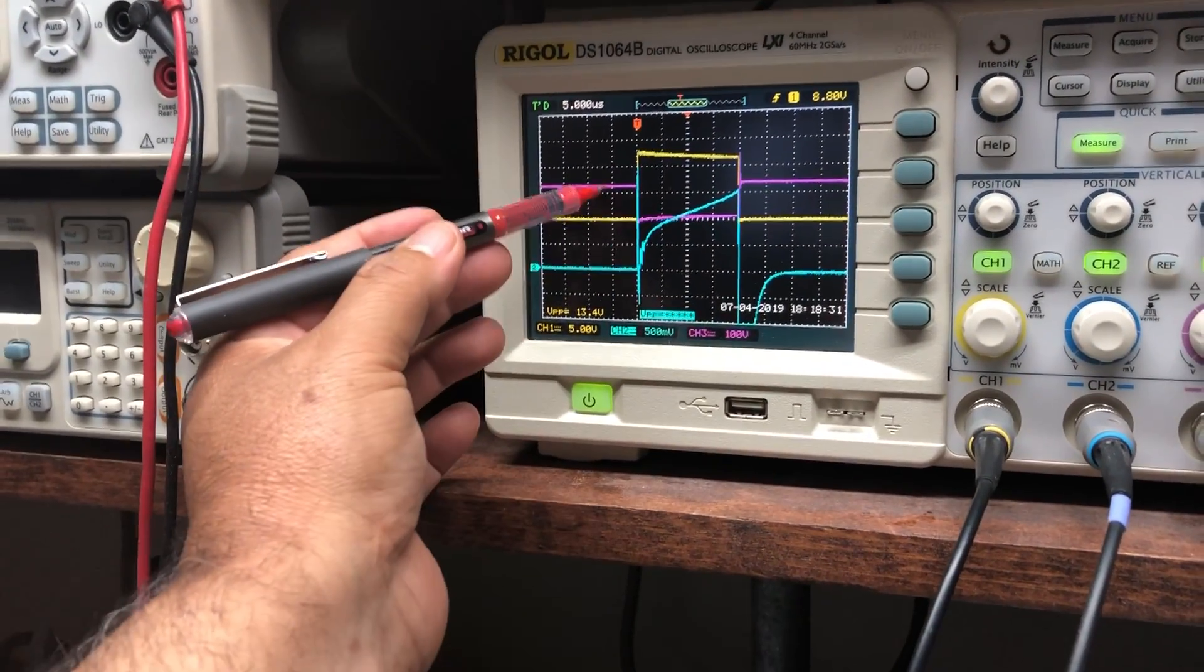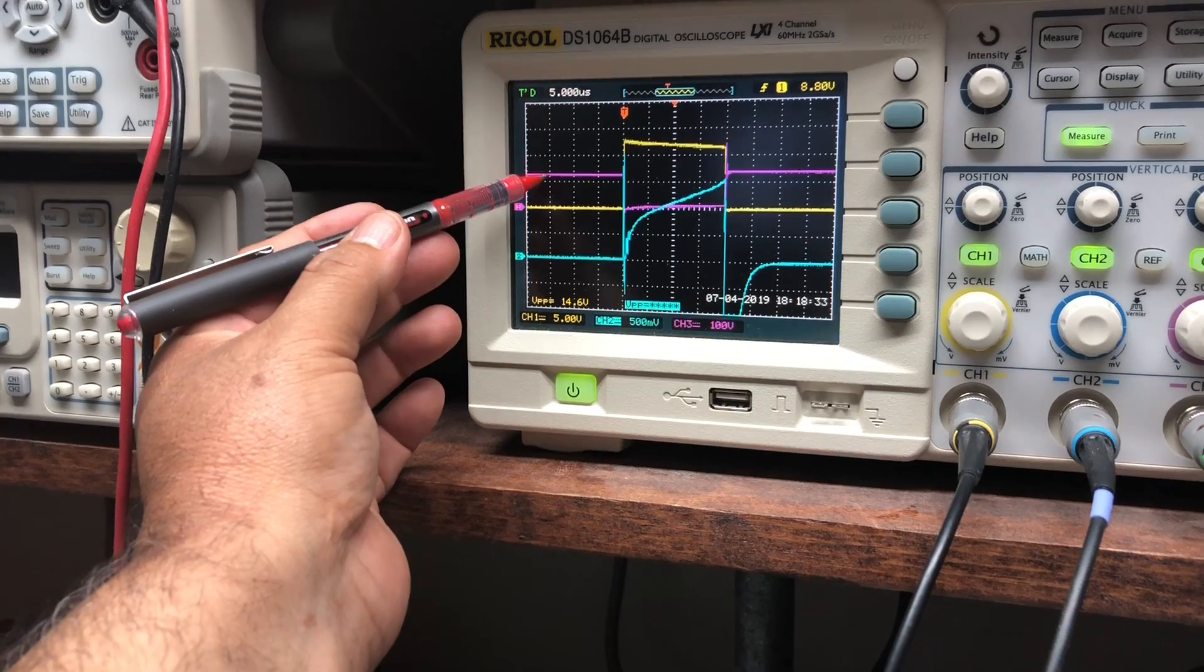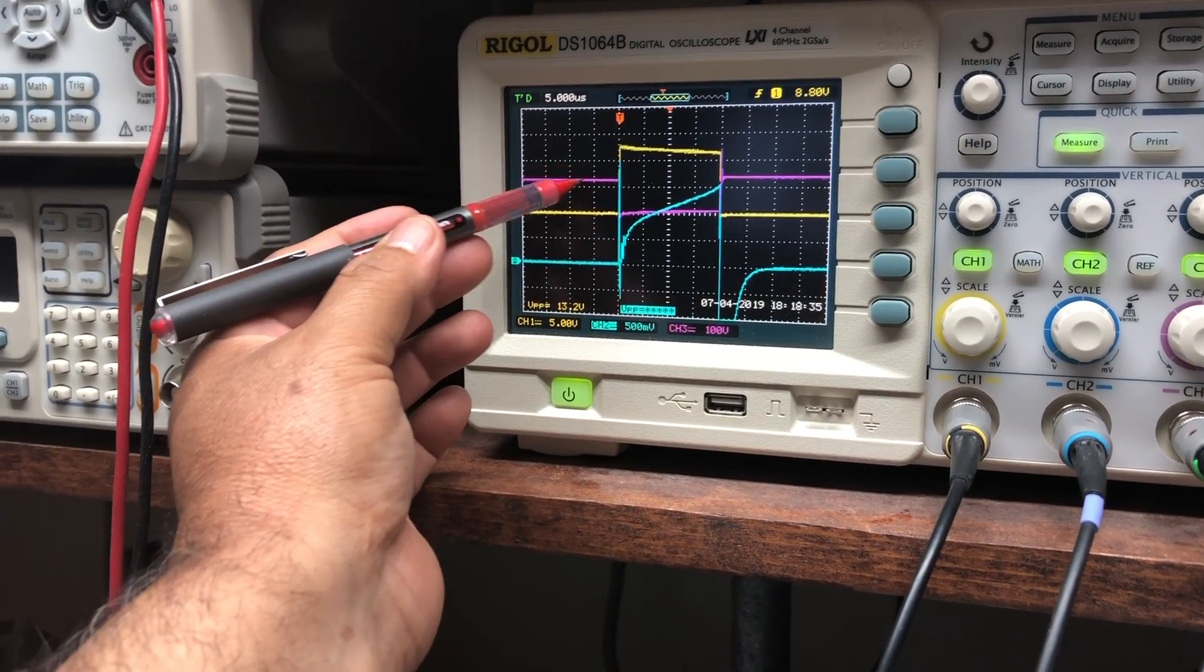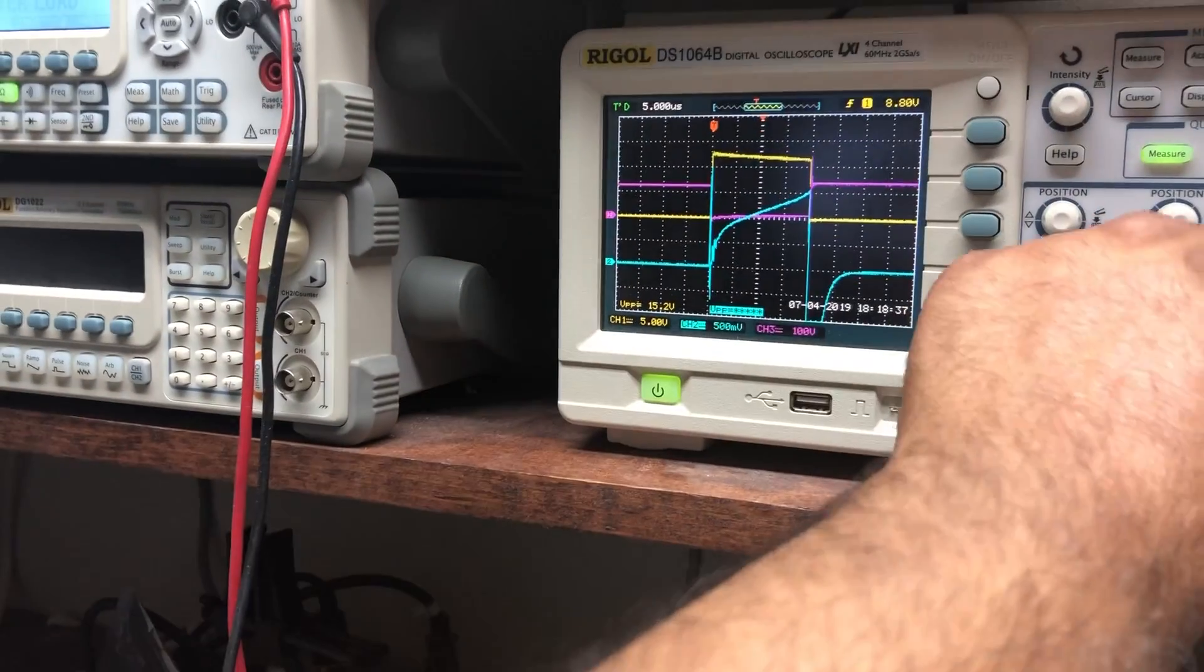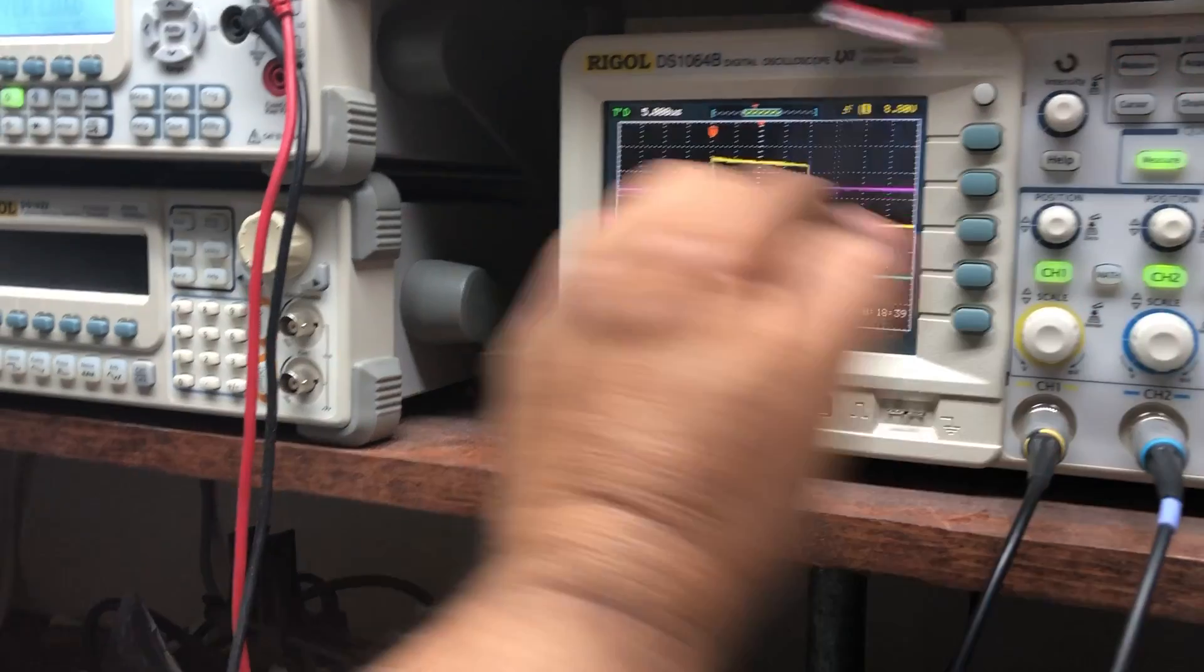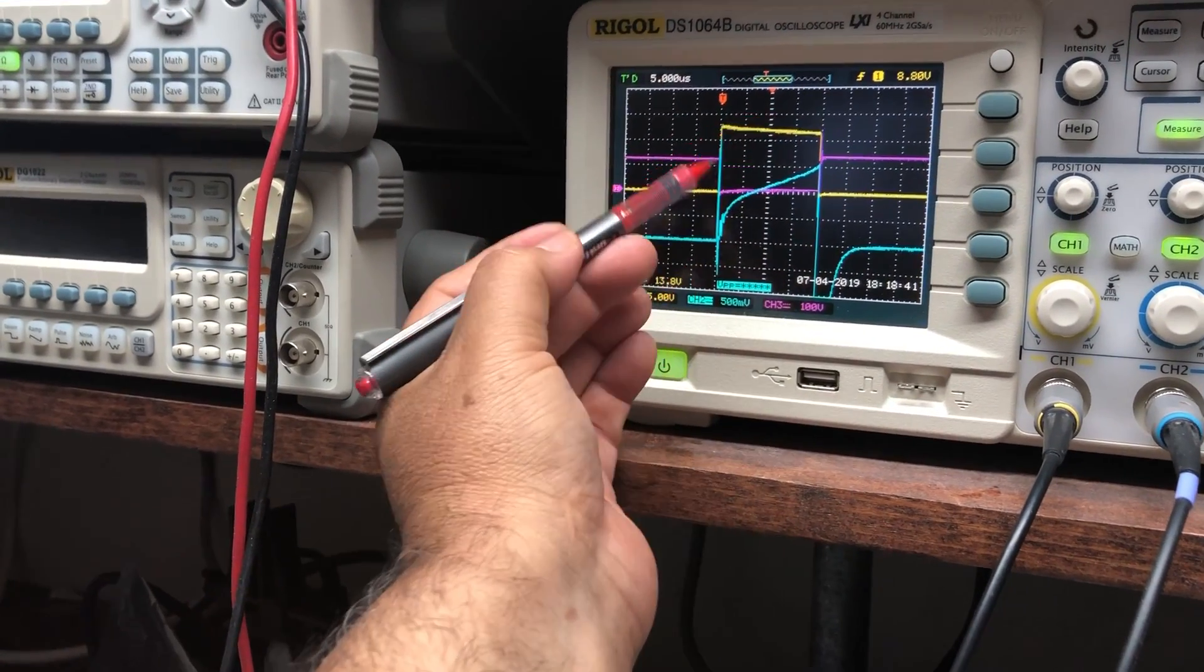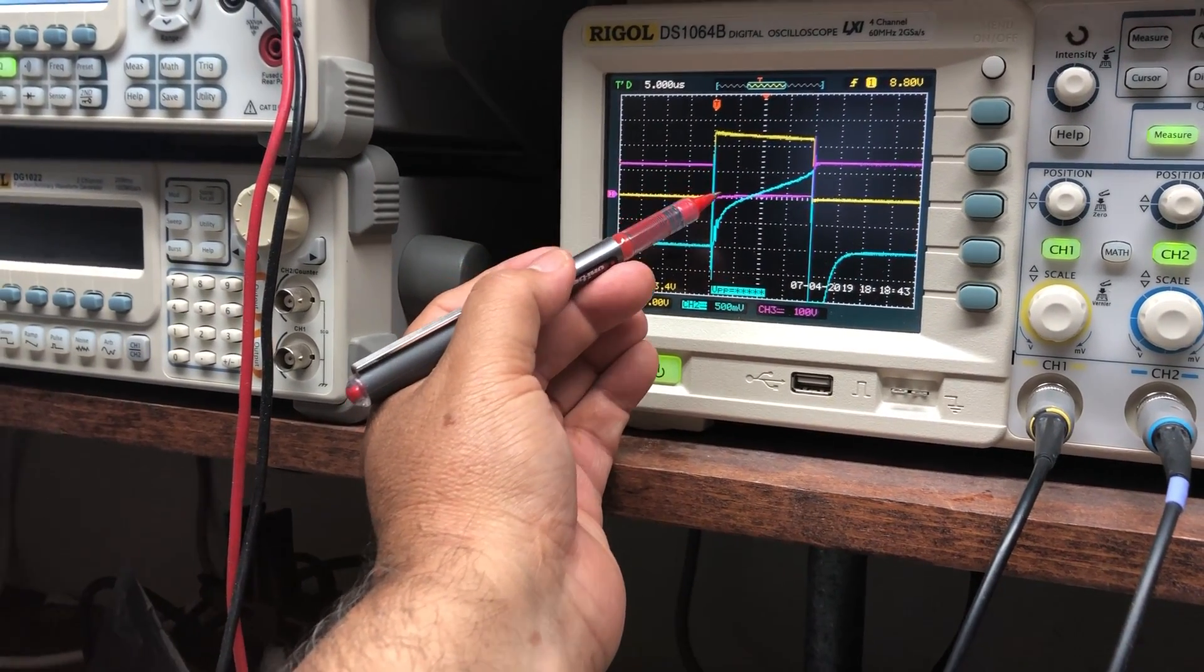The yellow is the gate and then the collector - not the collector but the drain - is the red one. Basically when the yellow goes up the drain goes down.